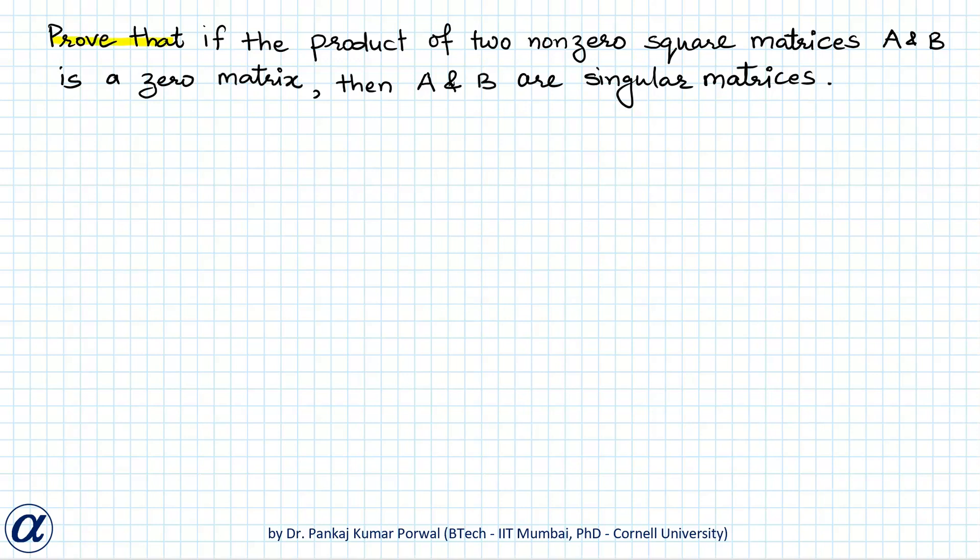In this session we want to prove that if the product of two non-zero square matrices A and B is a zero matrix, then A and B are singular matrices. That means their determinants are zero.